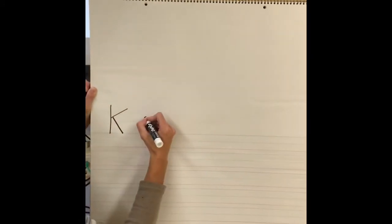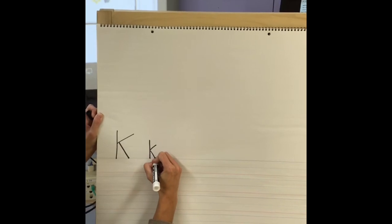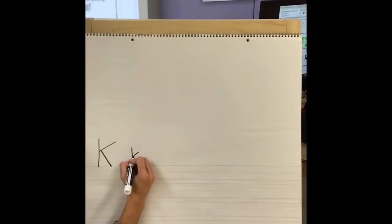And here is the lowercase: a line, smaller line up here, and smaller line down there. And that's the letter K.